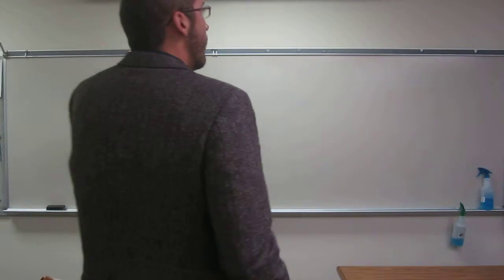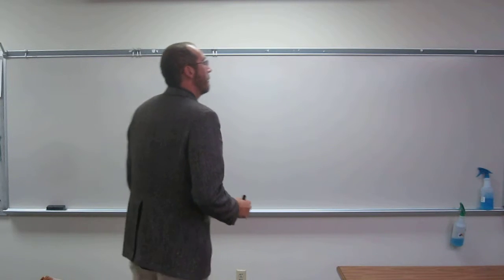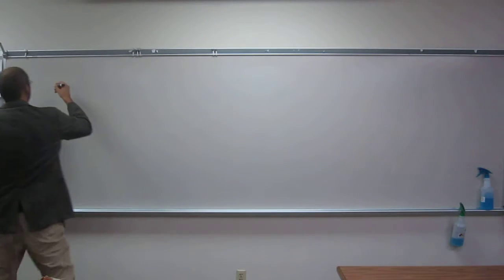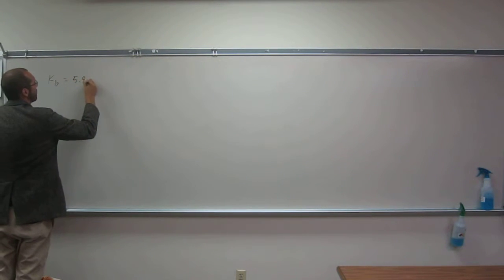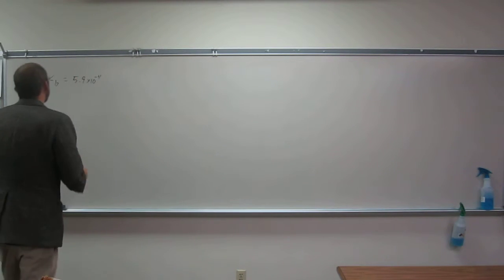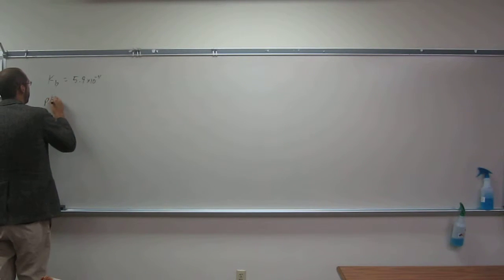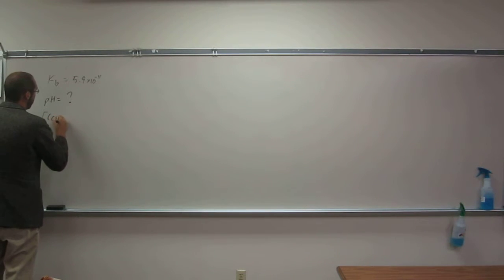Okay, so this one says dimethylamine CH3 2NH has a Kb of 5.9 times 10 to the negative fourth. It's right there. What is the pH, so that's what I want you to find, of a 1.5 molar solution of dimethylamine?